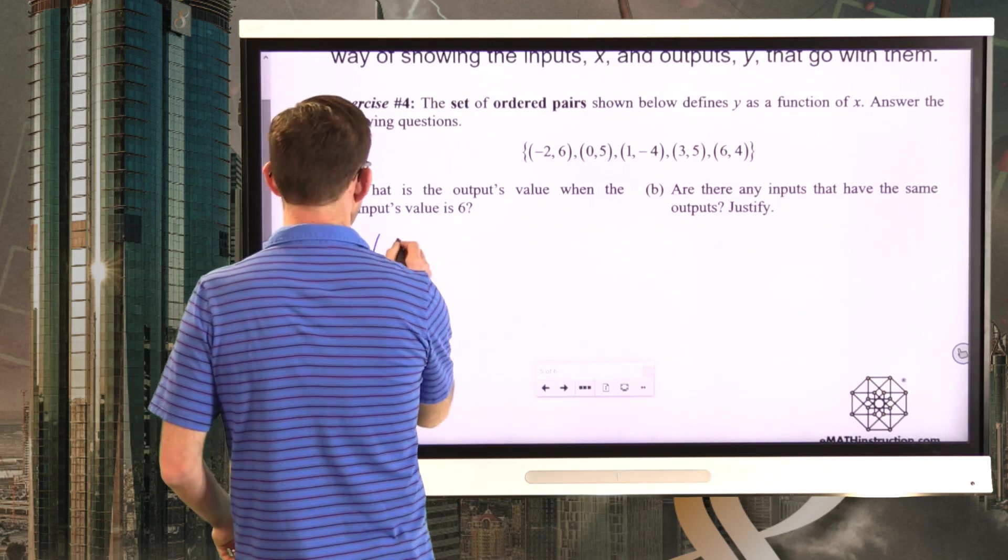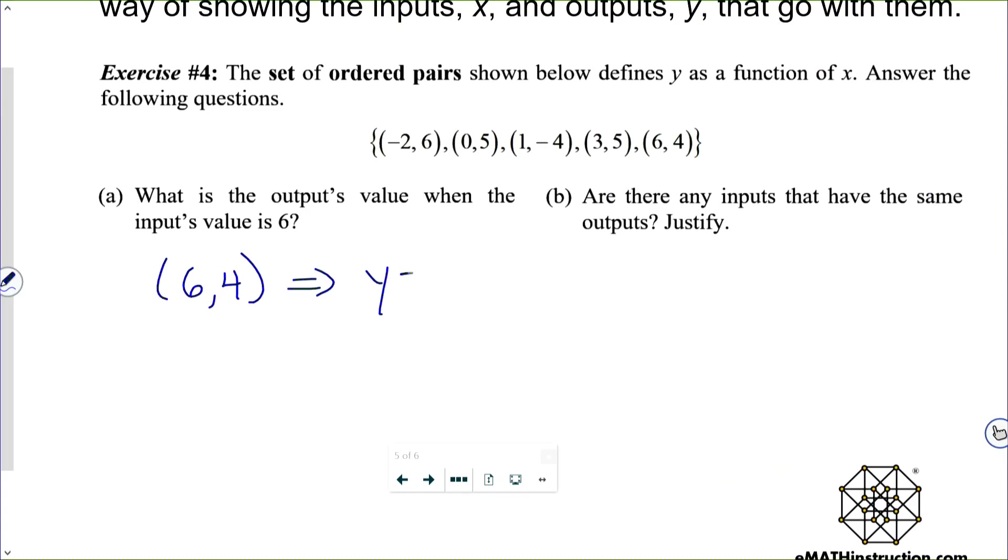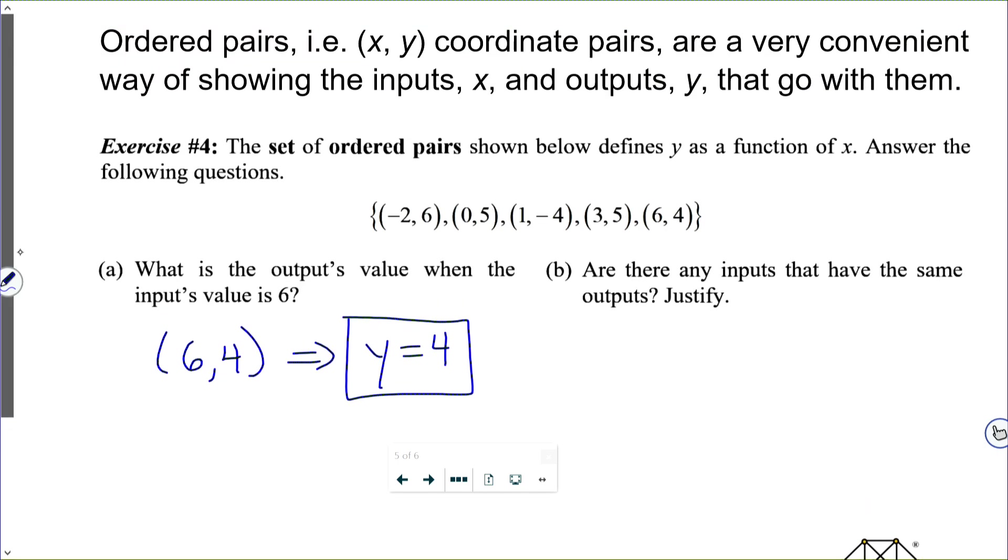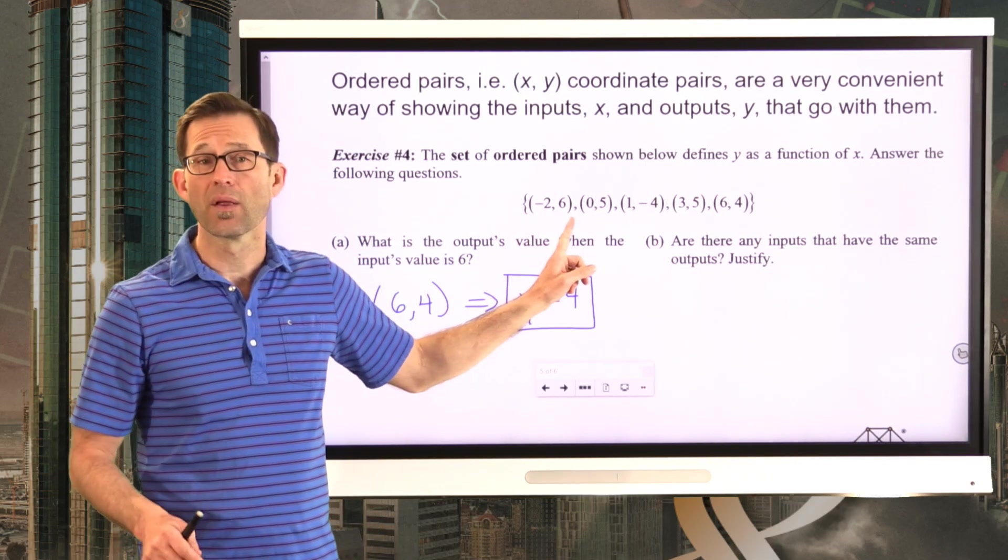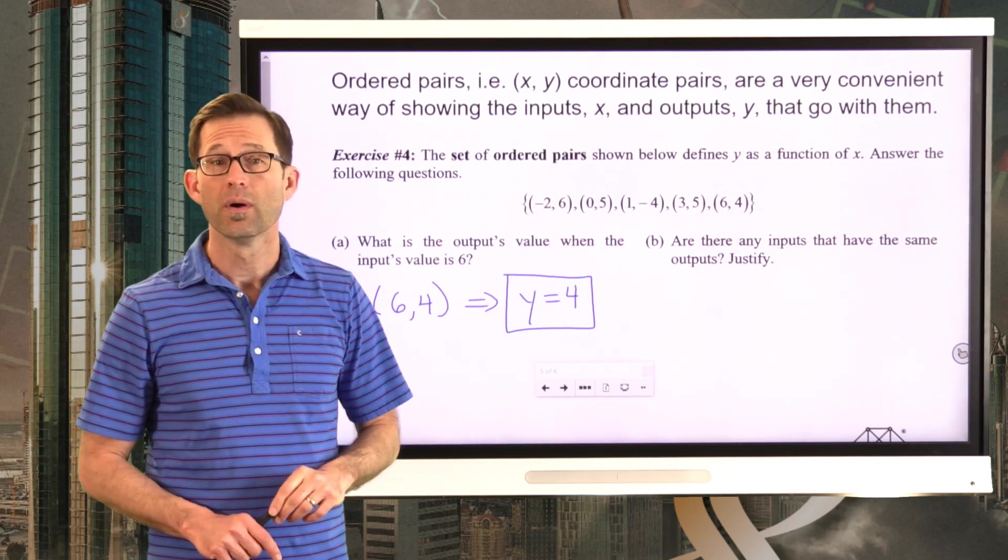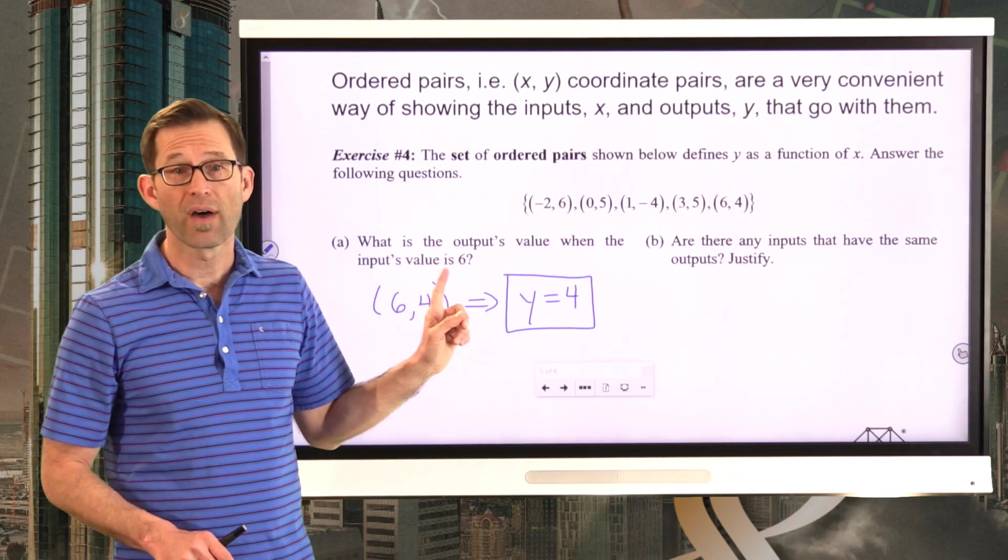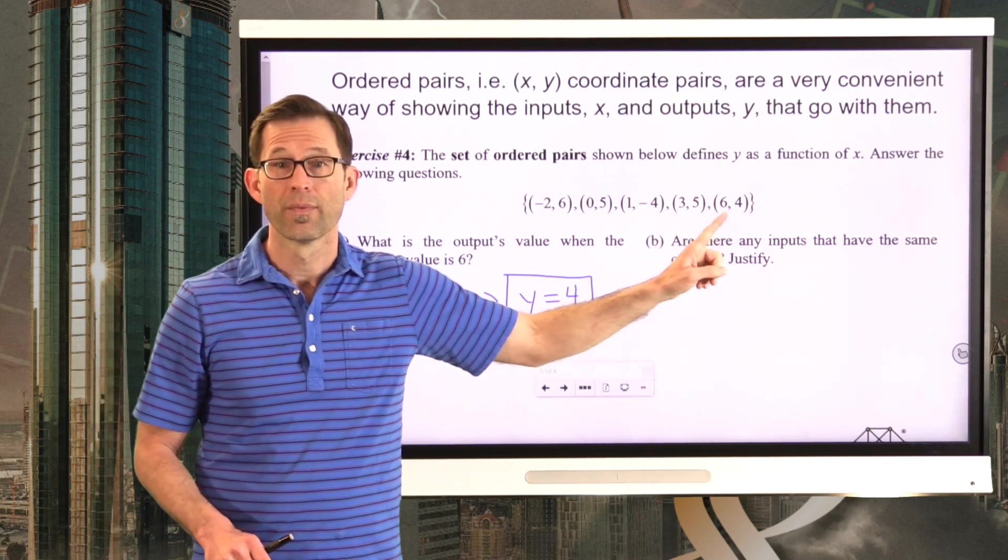All right. Literally, this isn't the answer. This just tells me y equals 4 is the output. You see, this one, negative 2 comma 6 would tell us, oh, when the output is 6, the input is negative 2. But we're saying, hey, look, if the input value is 6, then the output value is 4. All right. Letter b.